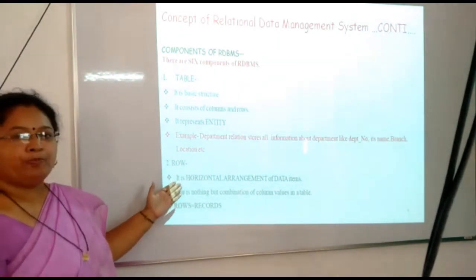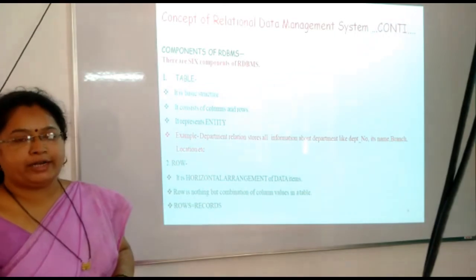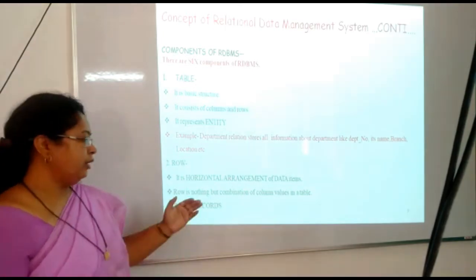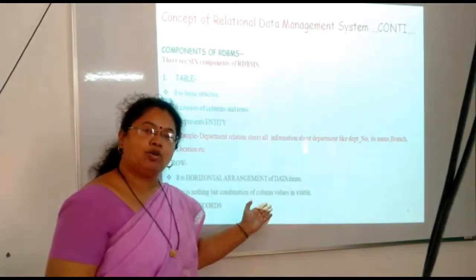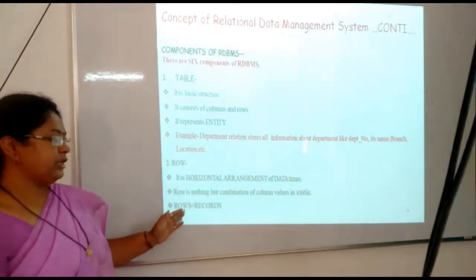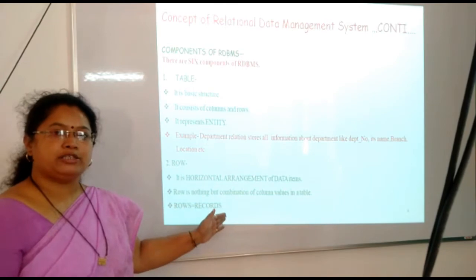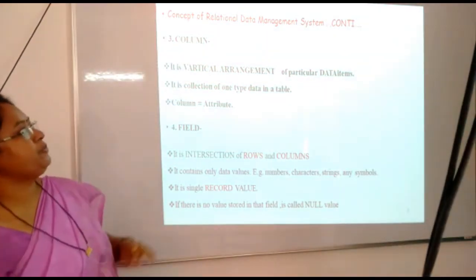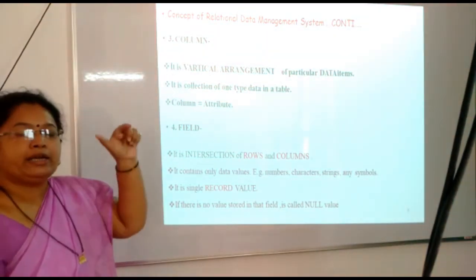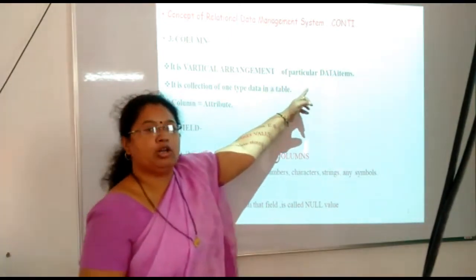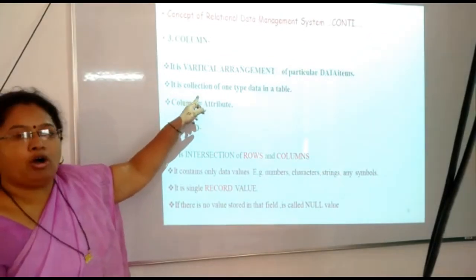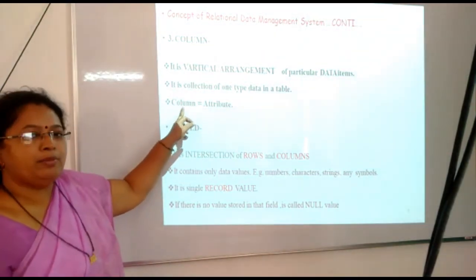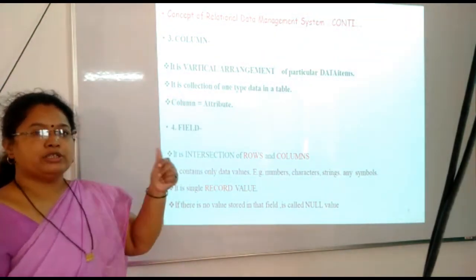What is a row? Row is nothing but the horizontal arrangement of data items within the table. Row is a combination of different column values of that particular table. Row is also called a record, and record is also called a row. The next component is column. Column is the vertical arrangement of a particular data item, and those data items are of only the same data type. Column is also called an attribute, and attribute is also called a column.